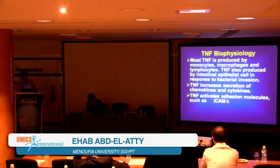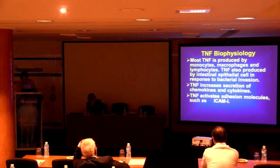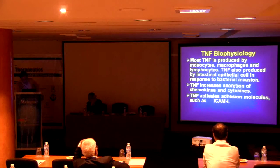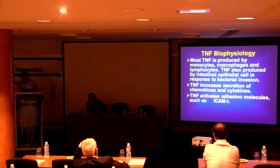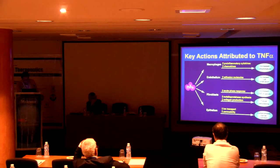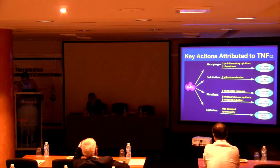What about tumor necrosis factor alpha? Most TNF-alpha is produced by monocytes, macrophages, and lymphocytes. TNF-alpha is also produced by intestinal epithelial cells in response to bacterial invasion. It increases secretion of chemokines and cytokines and activates adhesion molecules like ICAM-1. This figure shows the action of TNF-alpha on macrophages, endothelium, and fibroblasts, all increasing cell inflammation and cellular infiltration.